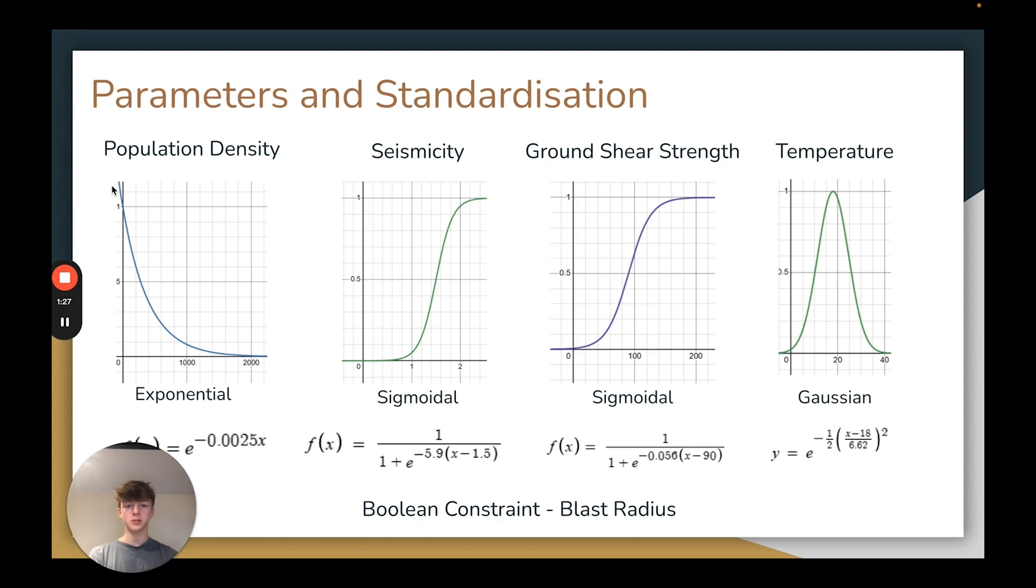For example, for temperature, we chose Gaussian, as it models how changes on either side of the ideal temperature would negatively impact suitability, the gradient of which we calculated using normal distribution, setting 0 degrees equal to 0.025 suitability.